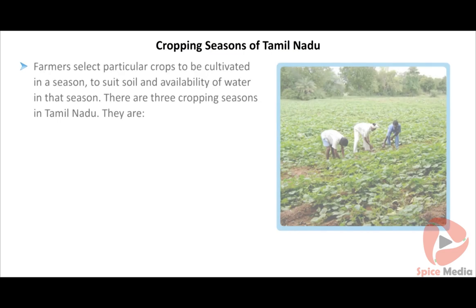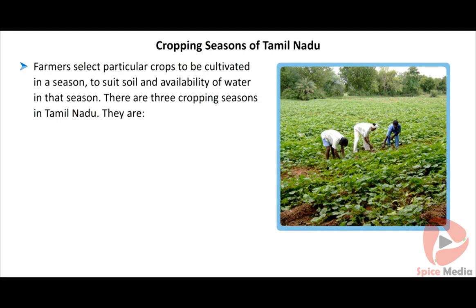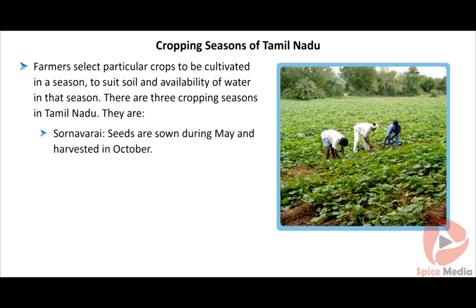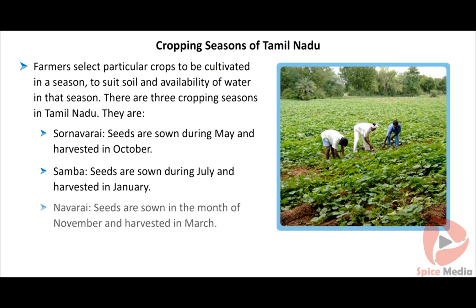Farmers select particular crops to be cultivated in a season to suit soil and availability of water. There are three cropping seasons in Tamil Nadu: Sornavare — seeds sown in May, harvested in October; Sambha — seeds sown in July, harvested in January; Navare — seeds sown in November, harvested in March.